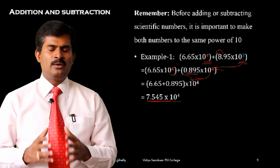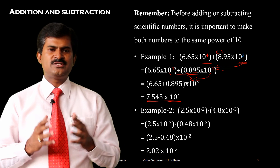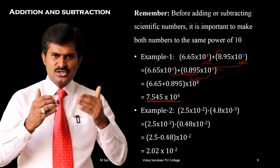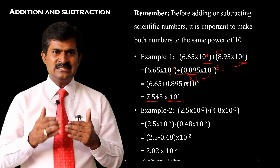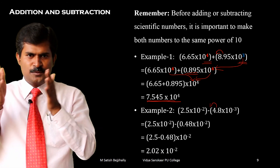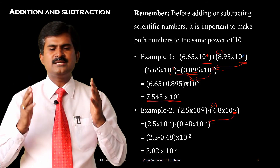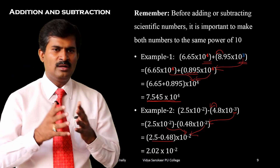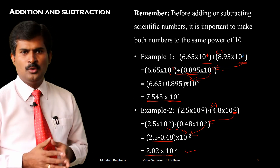Let us take example number 2, which explains subtraction: 2.5 into 10 to the power of minus 2 minus 4.8 into 10 to the power of minus 3. We match the exponents: 2.5 into 10 to the power of minus 2 minus 0.48 into 10 to the power of minus 2. Taking the common exponential factor outside, we subtract the coefficients: 2.5 minus 0.48 into 10 to the power of minus 2. Converting to scientific notation, we get 2.02 into 10 to the power of minus 2.